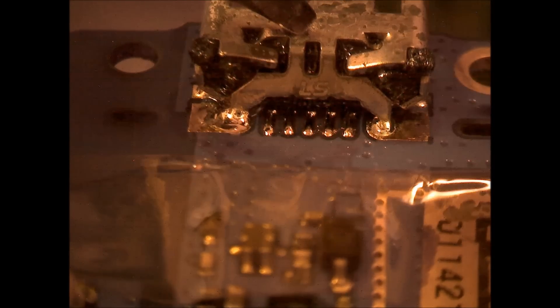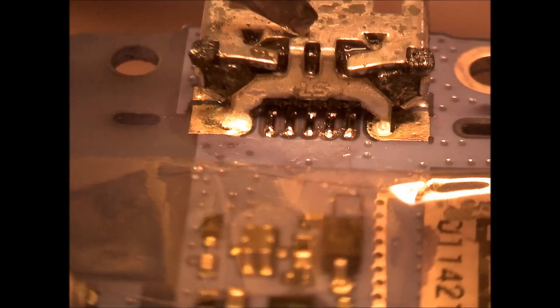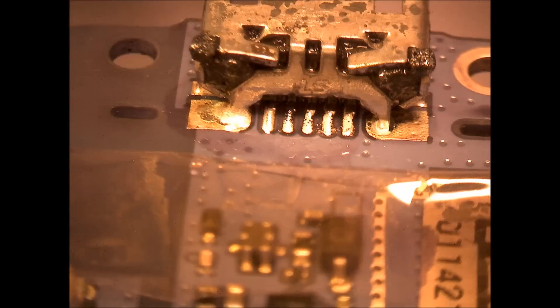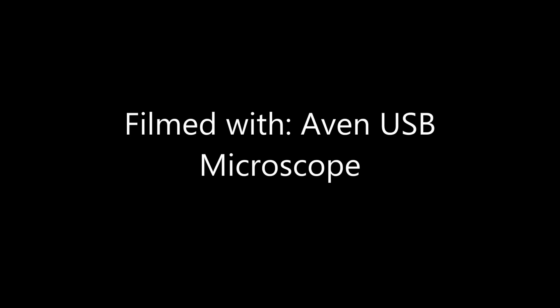Then we just use something with a sharp point, an Exacto knife, to kind of press it down on the charging port to make sure it was completely flush against the board. Then it dries up, and that's it. And it will work.